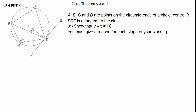Now let's move on to our last exam question. It states A, B, C, D are points on the circumference of a circle with centre O. We know FDE is the tangent to the circle. We are asked to show that Y minus X is equal to 90 degrees, and we must give a reason for each stage of our working out. Why don't you give it a go and press pause if you need.